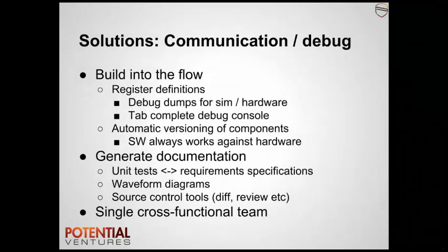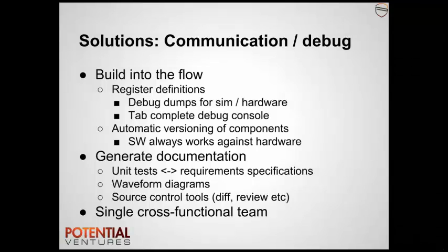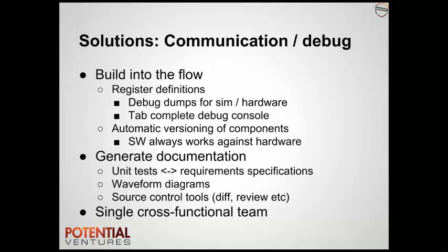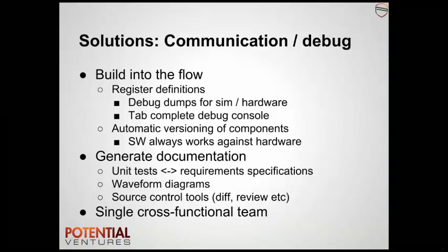Bringing hardware and software engineers together to collaborate on implementing and verifying a feature is one way to achieve improved communications. A large amount of implicit communication occurs between engineers that are working together, and it's very difficult — or even impossible — to formally track that communication, so we want to maximise this effect. A clear example of building communication into the development flow is the definition of configuration and status register maps. Software header files, hardware packages, and documentation should all be generated from a single definition. Thus, we remove the possibility of a mismatch between the hardware and software's view of the registers, and we provide a controlled communication channel. We can go one better and provide capabilities such as automatic versioning, which removes the burden of compatibility management.